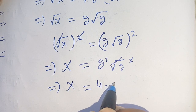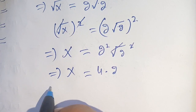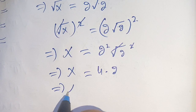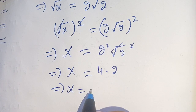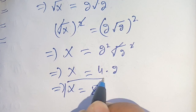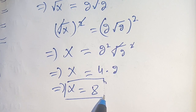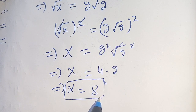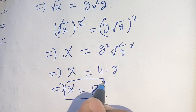This gives x equals 4 times 2, which equals 8. Thus the value of x is 8, which is the required value that satisfies our given equation.